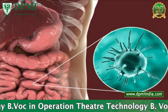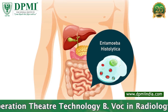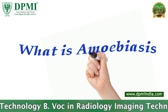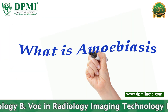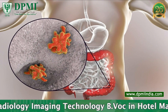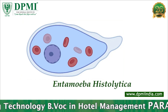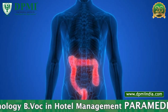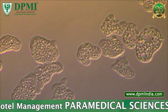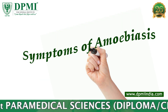Amoebiasis is an infection caused by the microorganism Entamoeba histolytica, transmitted through contaminated food or water. It is also known as amoebic dysentery. It is caused by a protozoan parasite of the human large intestine. They are cosmopolitan, living in the large intestine and producing eggs or cysts which are passed out of the body with the stool, resulting in diarrhea and colitis.